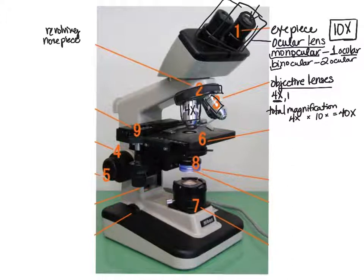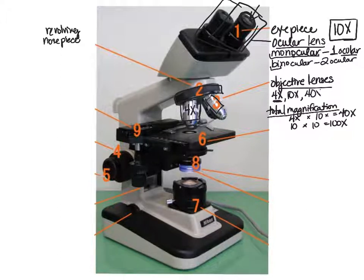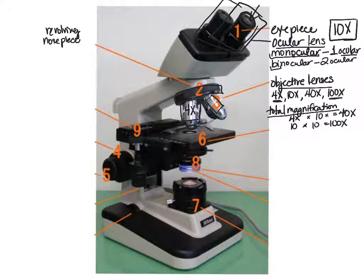Moving to the next objective lens, the 10x, gives us a total magnification of 100x. Then the 40x objective gives us 400x total magnification. The highest power objective lens on a typical brightfield microscope is the 100x objective, which gives us 1000x total magnification when combined with the 10x ocular. That is our highest powered objective lens.